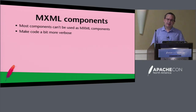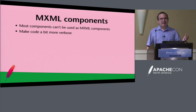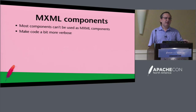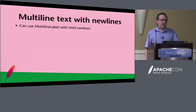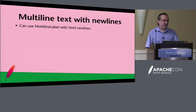Most components can't be used as MX and all components — that is by design. If you come from the Flex SDK world, this will take a little while to get used to; it does make your code a little more verbose, but performance shouldn't suffer. Multi-line text with new lines doesn't work. I tried all sorts of things and eventually just stopped using plain text — just use HTML and put BR tags in there. That seemed the easiest way to work around it.